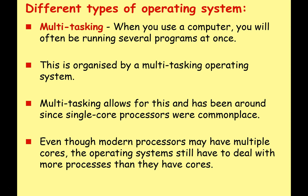Let's start with multitasking. When you use a computer, you will often be running several programs at once — that's fairly normal. This is organized by what we call a multitasking OS. Multitasking has been around since single core processors were commonplace, and even though today modern processors may have multiple cores and multiple processing units, operating systems still have to deal with more processes than cores.